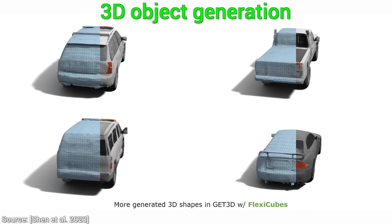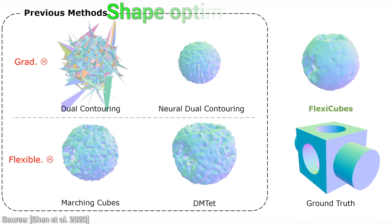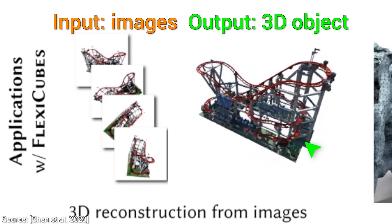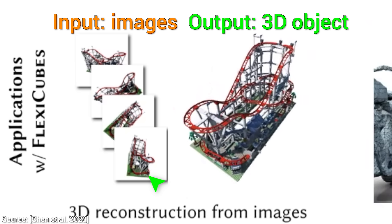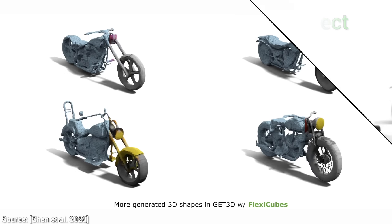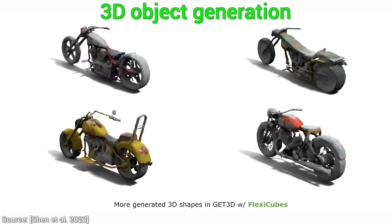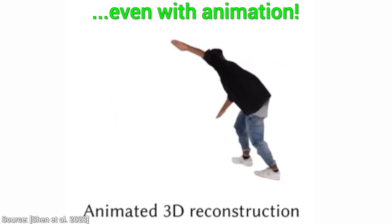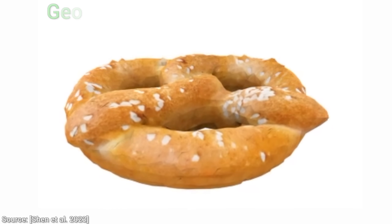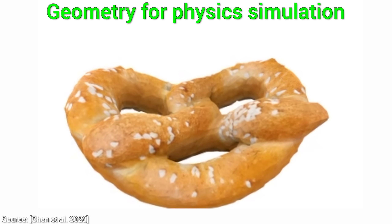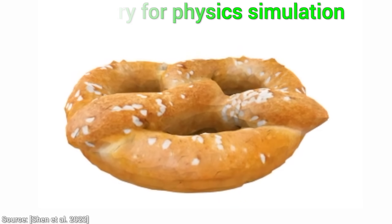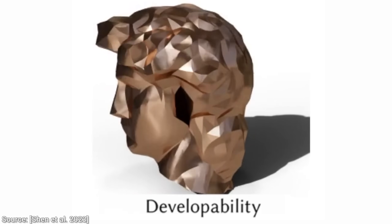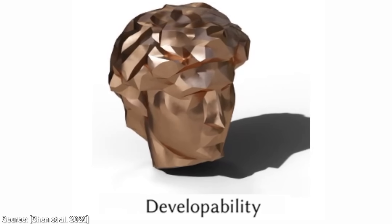This paper has a ton of promise — amazing promises! It promises to reconstruct 3D objects from a bunch of images, better generative 3D modeling, even creating an animated 3D model of us moving, tetrahedral mesh geometry for physics simulation for squishy things, and can also recommend geometry models that are easier to 3D print.